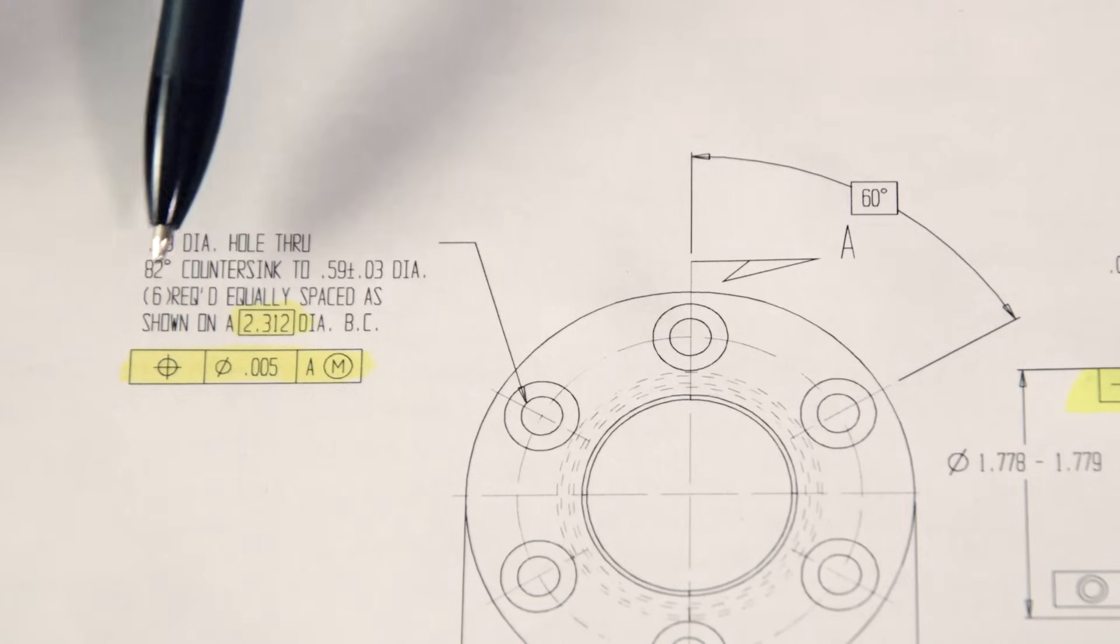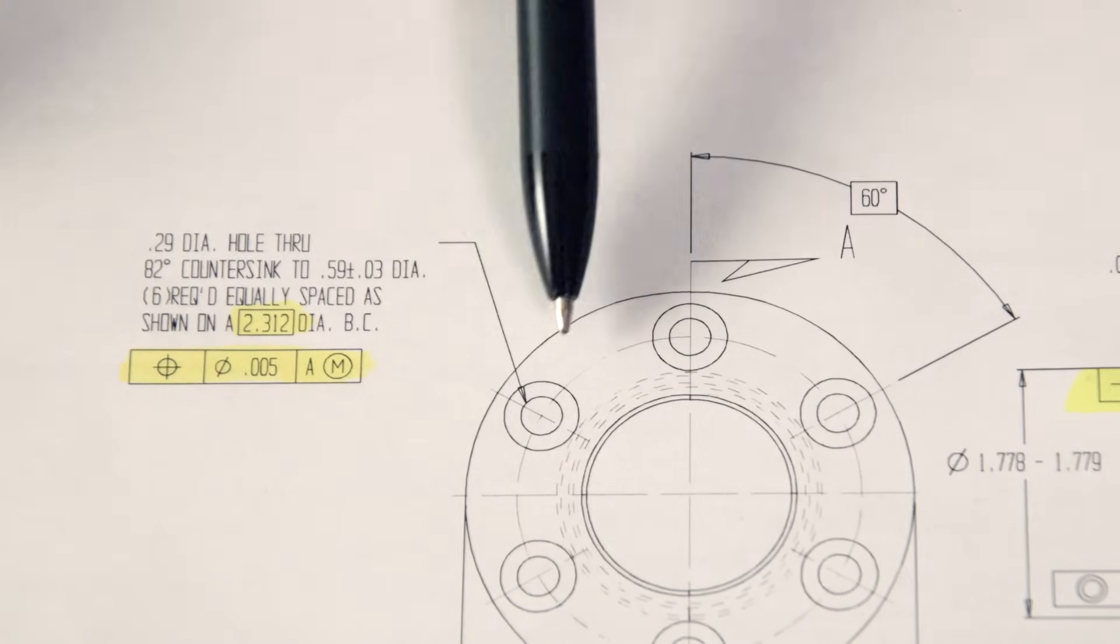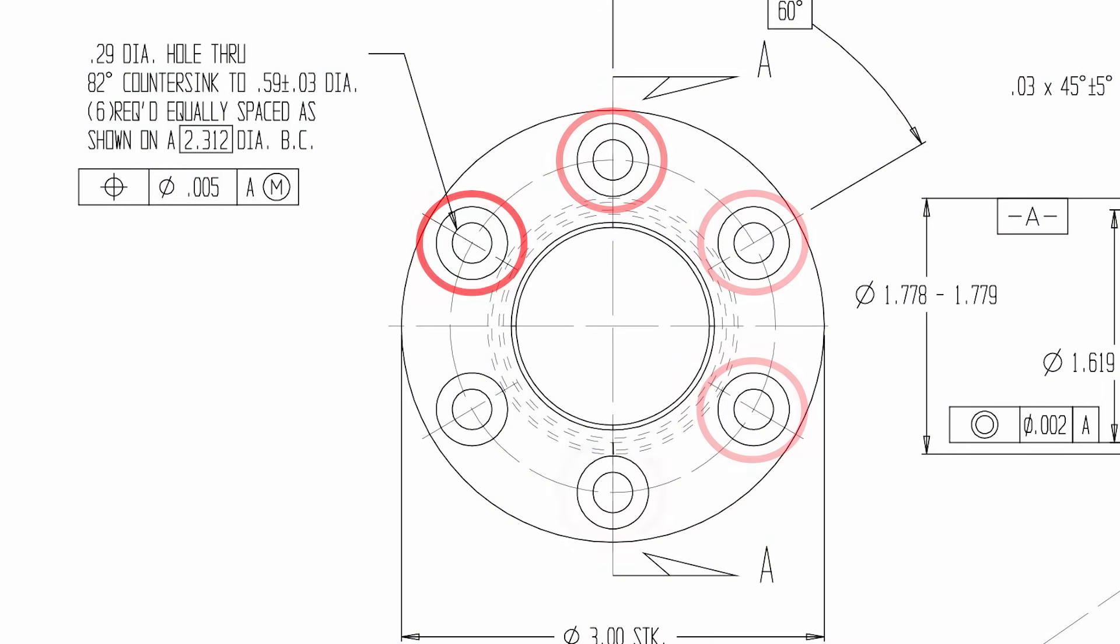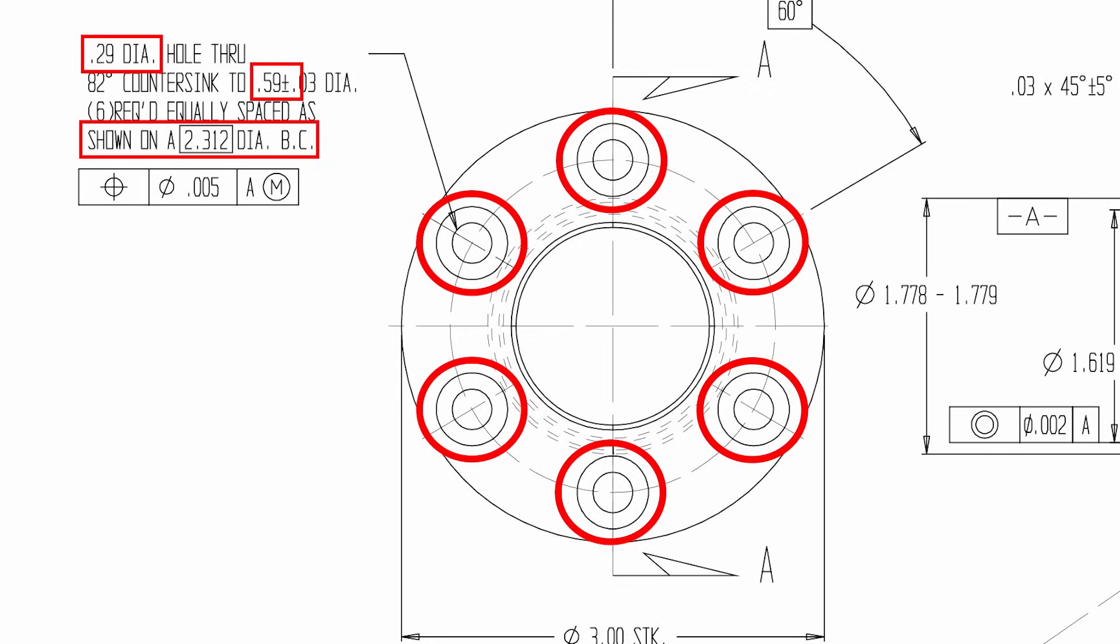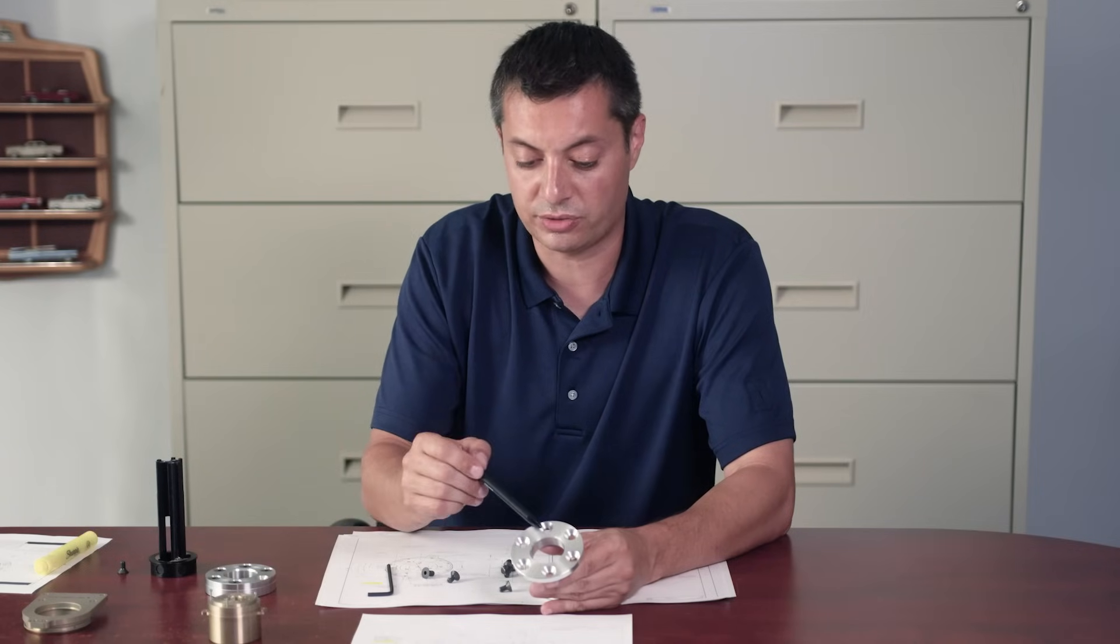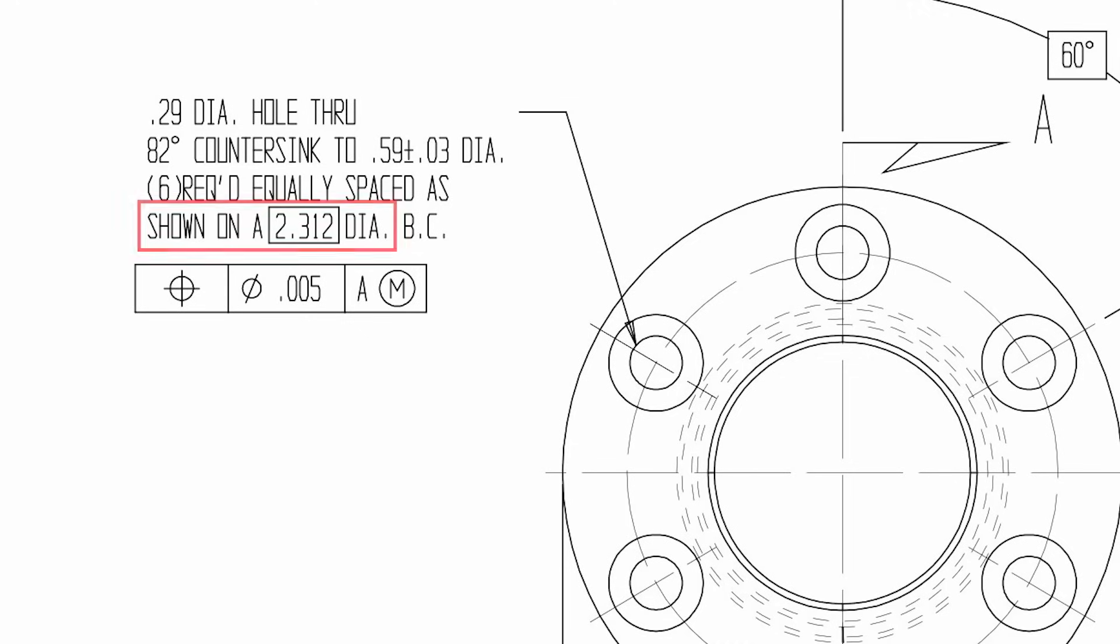So the way he solves it is by drawing only one arrow next to one hole and telling the machinist that these holes need to be 0.29 in diameter with a 0.59 countersink, and they need to be on a 2.312 diameter bolt circle, meaning that if you made a circle connecting the center point of these six circles, it would measure 2 inches and 5 sixteenths, 2.312.